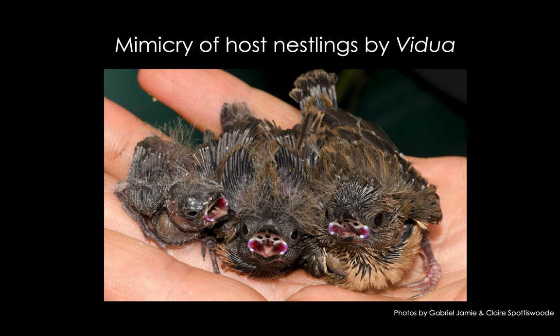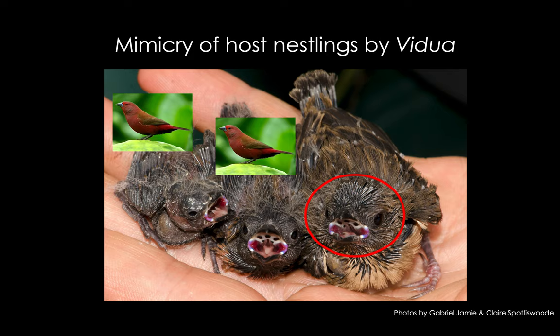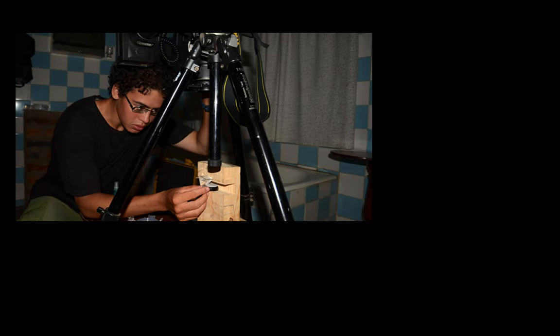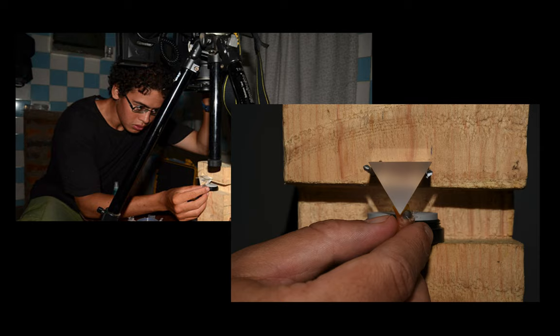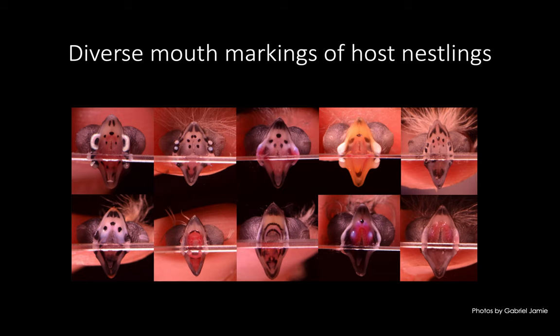On this slide you can see a parasitic purple indigo bird chick on the right, with two Jameson's firefinch chicks on the left. While they look similar now as chicks, they'll grow up to look very different as adults. To quantitatively test the mimicry in this system, we developed a new method to photograph inside the mouths of nestling birds, generating standardised detailed photographs that measured colour also in the ultraviolet part of the spectrum. This involved gently holding the chick so that it bit on the apex of a prism, allowing the inside of the mouth to be projected evenly onto the opposing flat surface, which was then photographed with a specially modified UV-capable camera. The process didn't harm the chicks, and they were returned to the nests after being photographed.